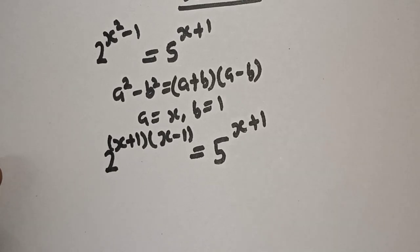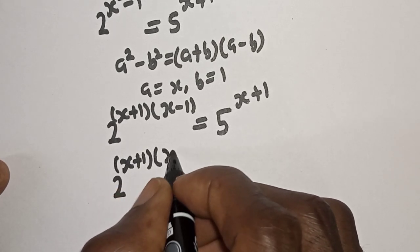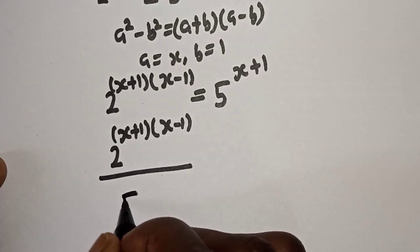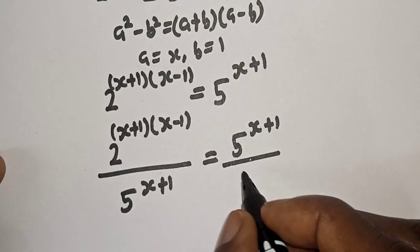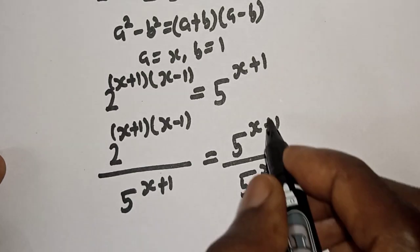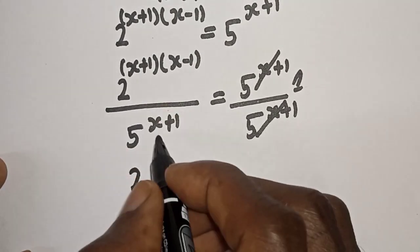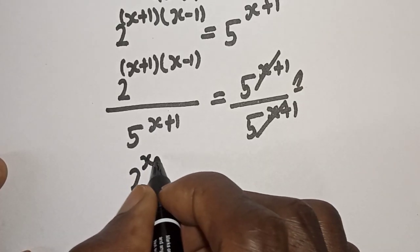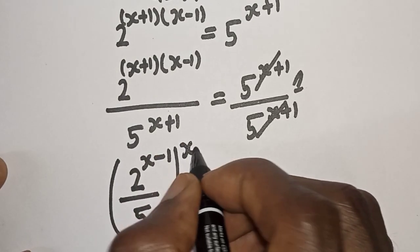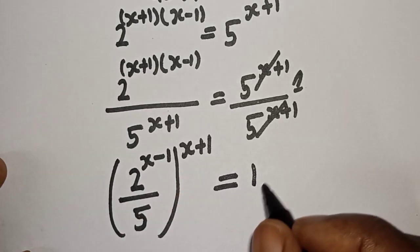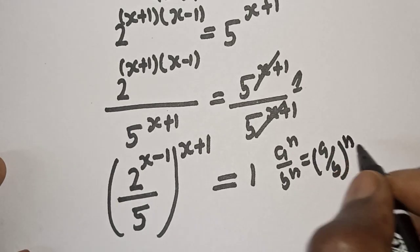Now let's divide both sides by 5 raised to power s plus 1. We have 2 raised to power (s plus 1)(s minus 1) divided by 5 raised to power s plus 1 equals 1, since the right side cancels. This gives us 2 raised to power (s minus 1) over 5 raised to power (s plus 1) equals 1, because if you have a raised to power n over b raised to power n, this equals (a over b) raised to power n.